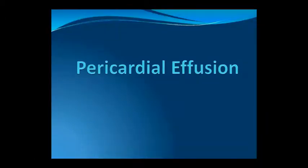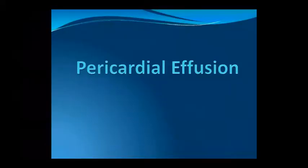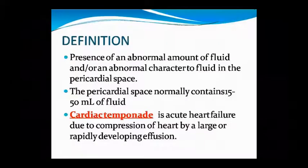Good morning class. This is our new pathology class in which today we will study about the second topic of cardiac pathology, that is pericardial effusion. Pericardial effusion is the accumulation of fluid in the pericardial sac, due to imbalance between hydrostatic pressure and oncotic pressure. Normally 15-50 ml fluid is found in the pericardial sac; if it becomes excess, the condition is called pericardial effusion.